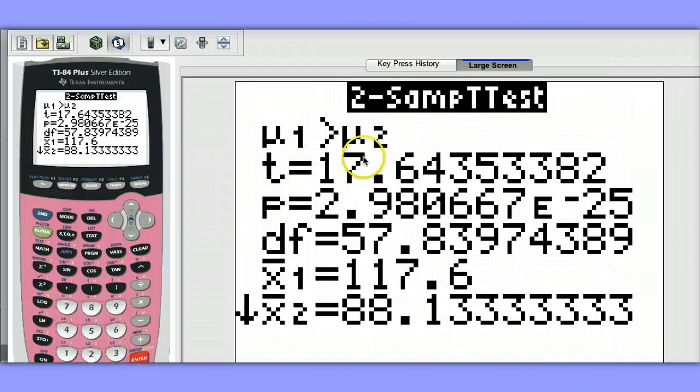So our test statistic value is about 17.6. Our p-value is essentially 0. Notice our degrees of freedom here is 57.